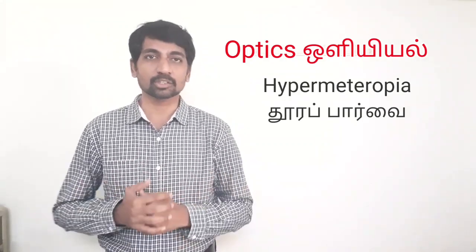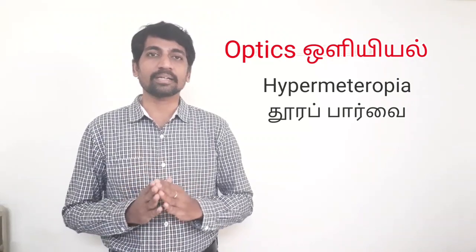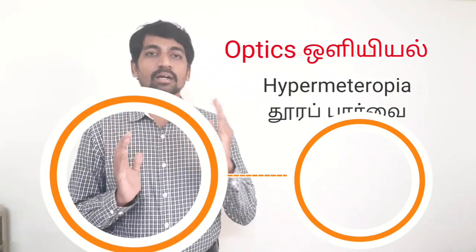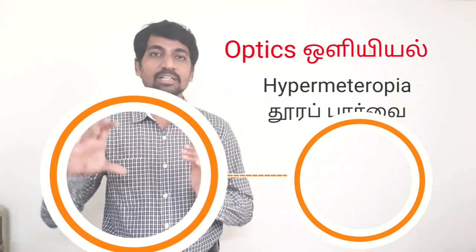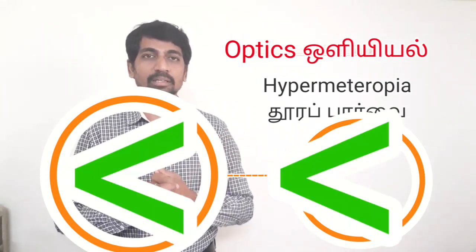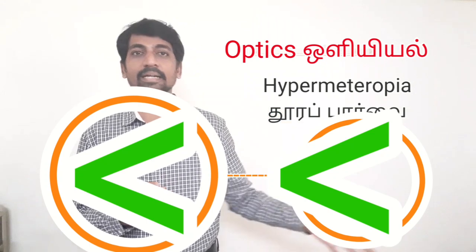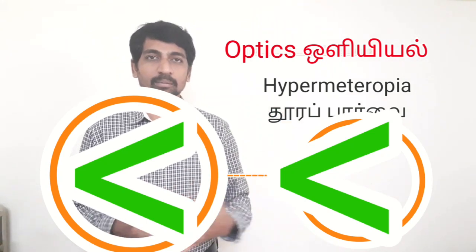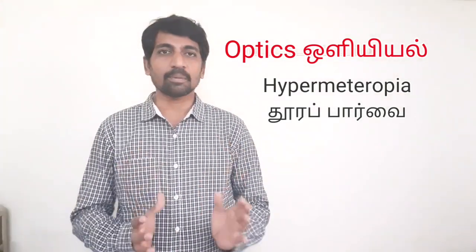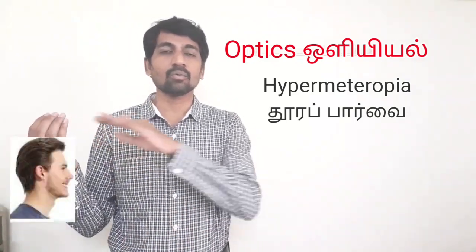Hypermetropia is long-sightedness, where distant objects are clear but nearer objects are not. This is caused by a shortening of the eyeball — the eyeball is small, so the lens-to-retina distance is small and the focal length increases. Light from a nearer object converges behind the retina instead of on it. This defect is corrected using a convex lens.